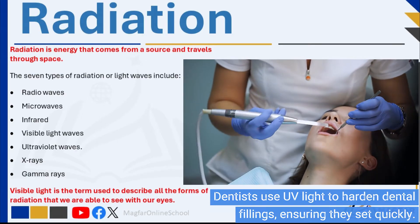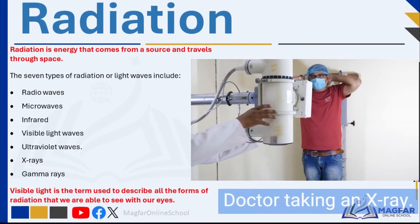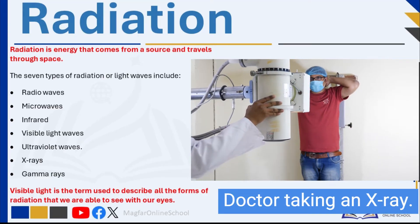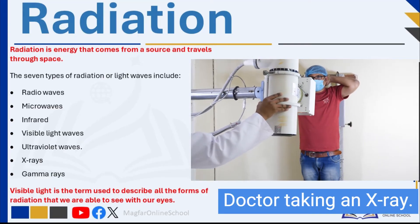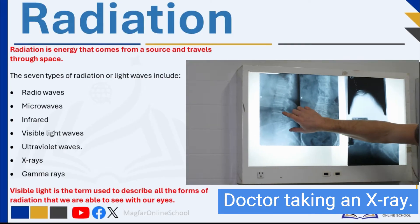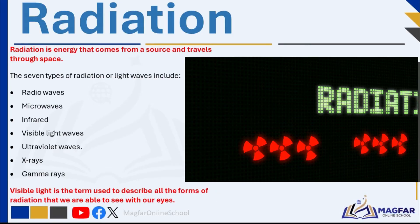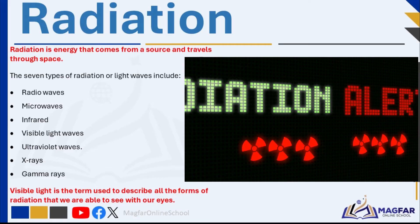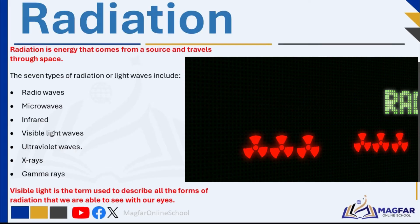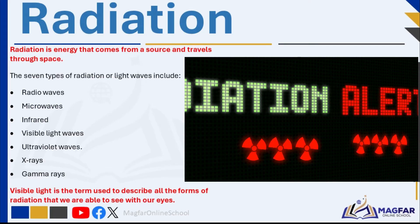X-rays are high-energy waves that can penetrate the skin and reach bone, hence we use these light waves in X-ray machines to identify fractured or broken bones. Gamma rays are high-energy waves released from radioactive atoms that split at the nucleus. Gamma rays are used in nuclear power plants to heat up water.